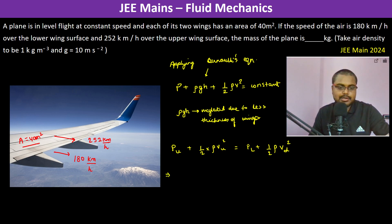Now first let us convert 252 km per hour into meter per second. So 252 into 5 by 18. This is 70 meter per second. And 180 km per hour becomes 50 meter per second.